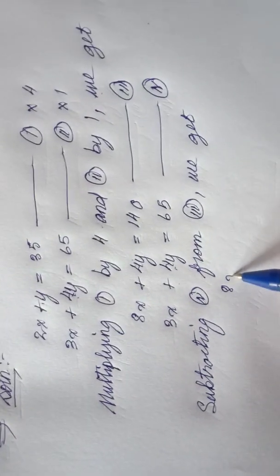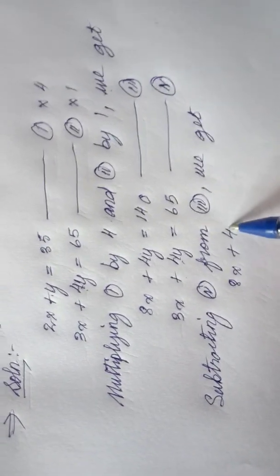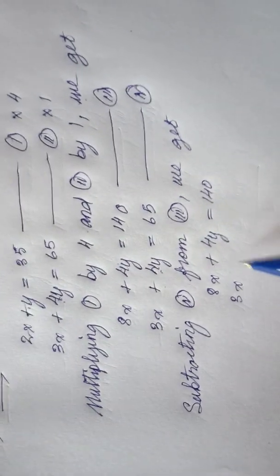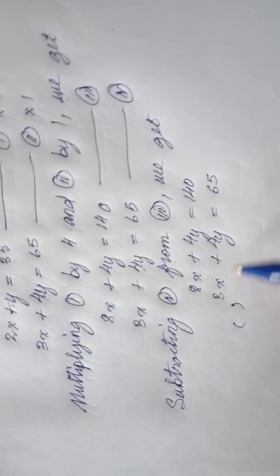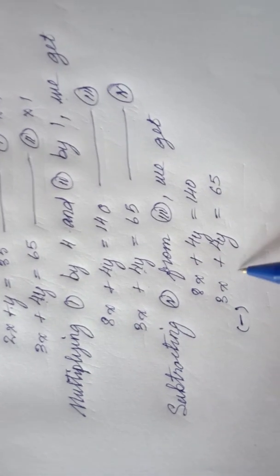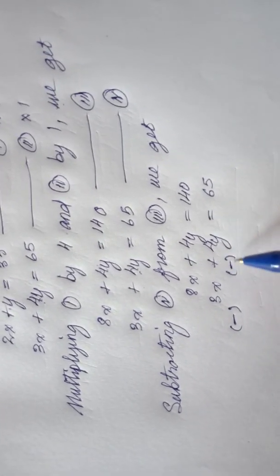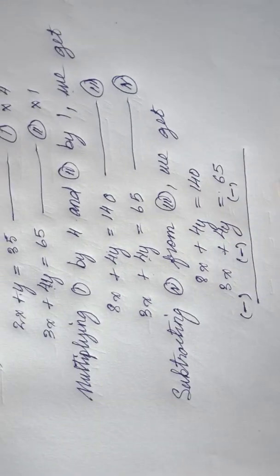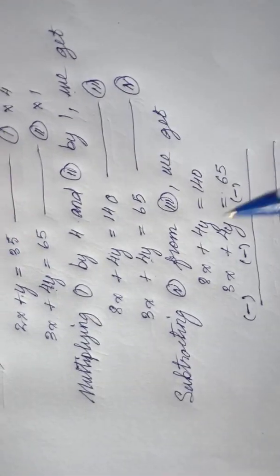I will rewrite both equations here for better understanding. In case of subtraction, you have to change the sign of the second part of the equation. Always change the sign. Minus will become plus, plus will become minus. If it is minus here, it will change to positive. So let's do the calculation here.